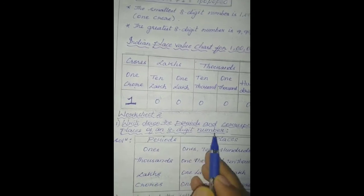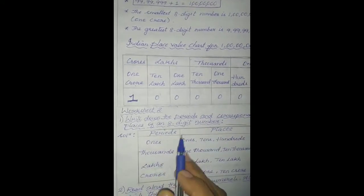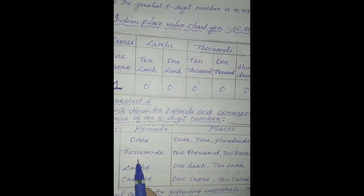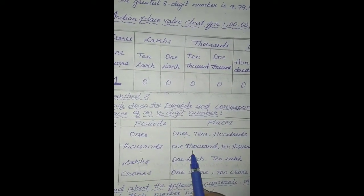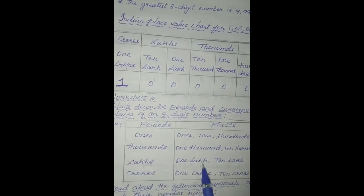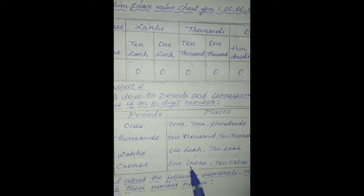Let us solve the sums on worksheet number 2. Write down the periods and corresponding places of an 8-digit number. The periods are: 1s period (places: 1s, 10s, 100s), 1000s period (places: 1000s and 10,000s), lakhs period (places: 1 lakh and 10 lakhs), and crores period (places: 1 crore and 10 crores).